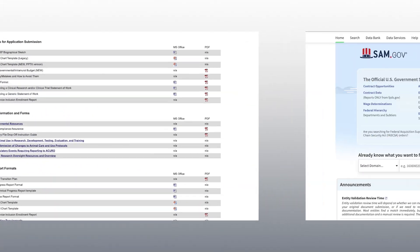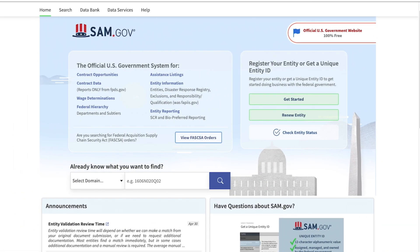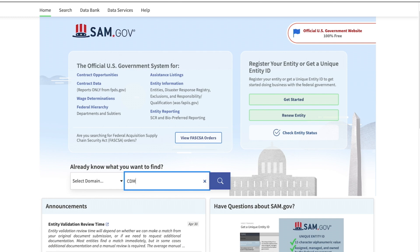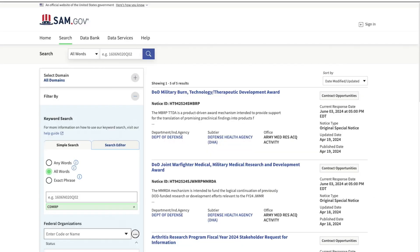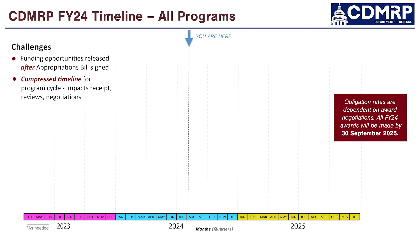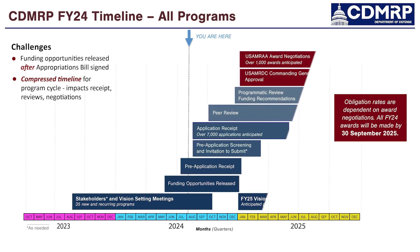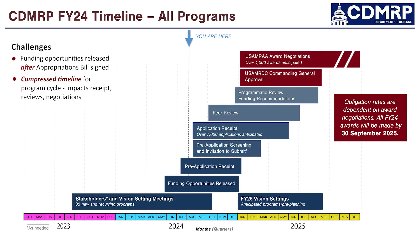Finally, notices of funding opportunities that allow for contracts, such as Broad Agency Announcements, or BAAs, will be posted to SAM.gov. Different research programs may release funding opportunities on different dates, and the release dates of a specific program's funding opportunities can vary year-to-year depending on when that year's appropriations arrive.